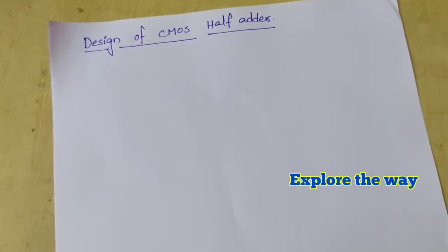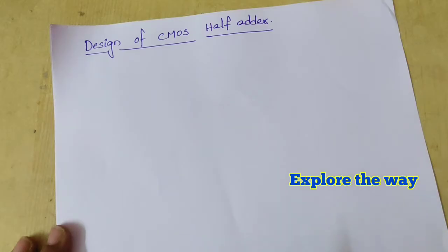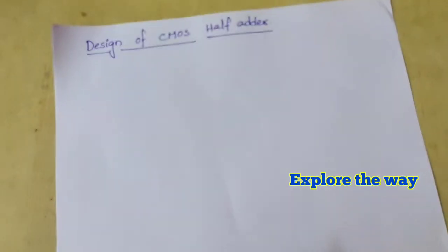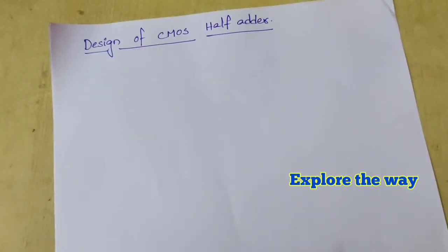In this video, I am going to design a CMOS half adder. A half adder is a combinational logic circuit that adds 2 bits and produces a sum output and a carry output.